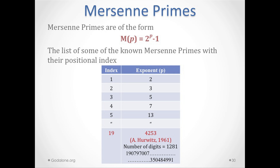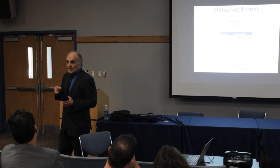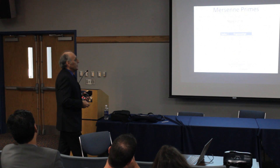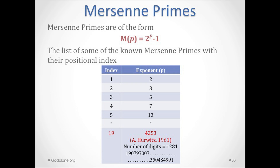The 19th Mersenne prime has exponent 4253, meaning you multiply 2 by itself 4253 times to get a number with 1281 digits. From the Wikipedia page, it starts with 19079 and ends with 91 — I put dots in between because I can't write out 1281 digits. This was actually discovered in 1961, about 51 years ago, requiring modern computers.